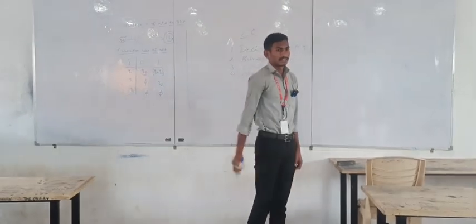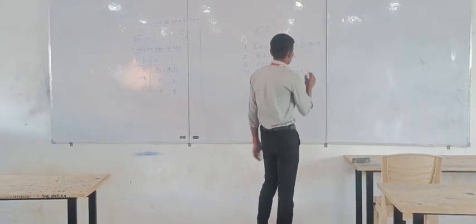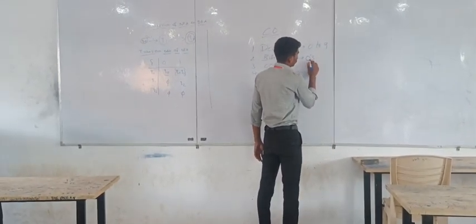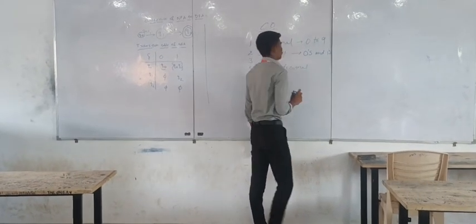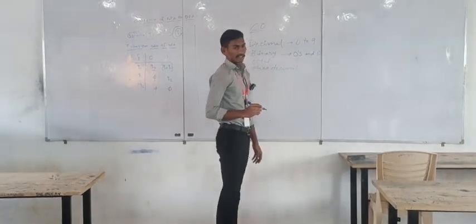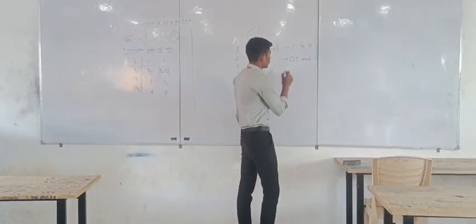Second one is binary. We can represent in terms of zero and one. Third one is octal. We can represent in terms of zero to seven.